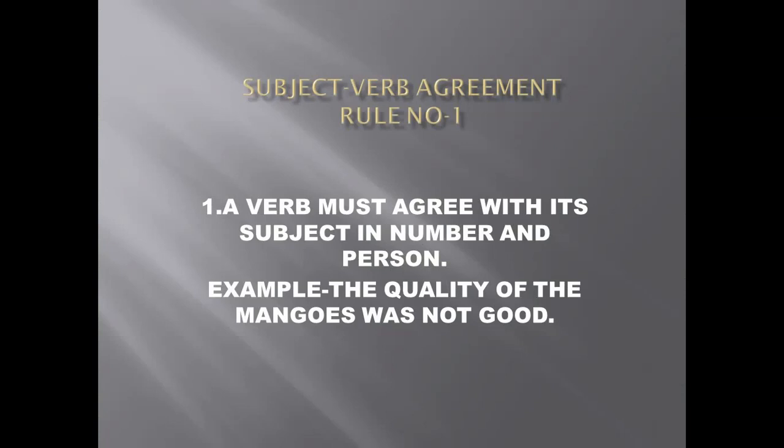Regarding person — first person, second person, third person — whatever is the person of the subject, we have to use a verb according to the subject. For example: 'The quality of the mangoes was not good.' We are talking about 'the quality' here, and that is why we have used the singular verb 'was'.